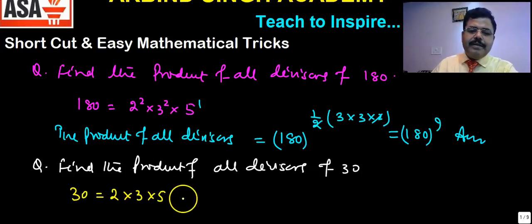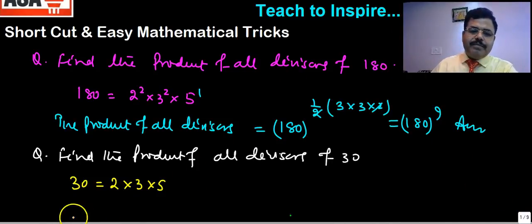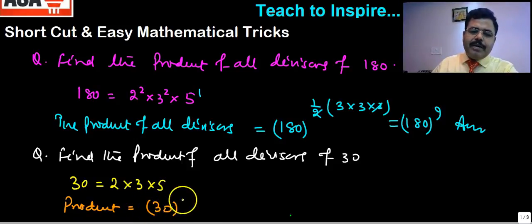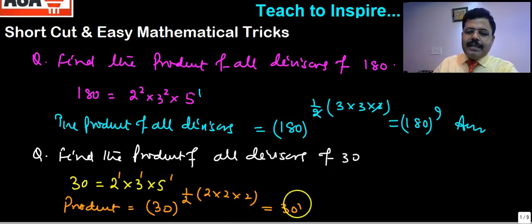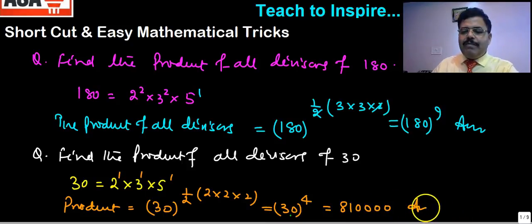According to our formula, the product of all divisors will be 30 to the power of half the number of divisors. The number of divisors is 2 × 2 × 2 = 8, so half is 4. That's 30⁴ = 810,000.